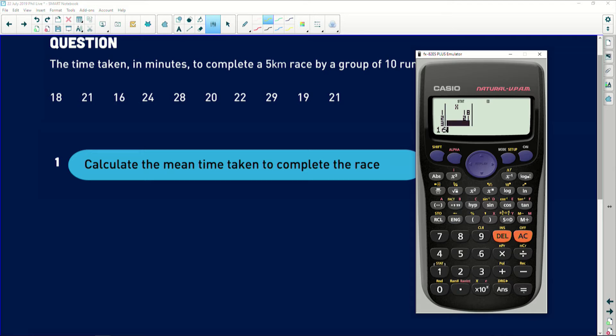So 21, 16, 24, 28, 20, 22, 29, 19, and 21. And you see there are 10 variables listed, which we know we have a group of 10. So we're on track. Now you press AC, which means that it has stored our data in the calculator.